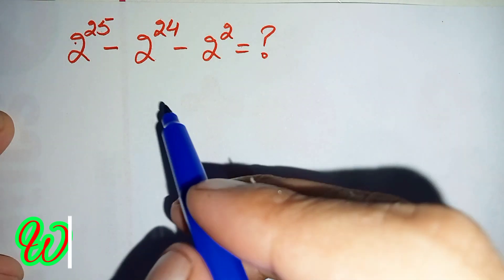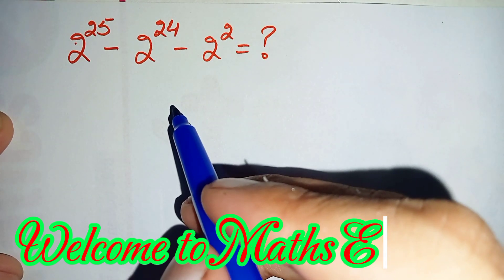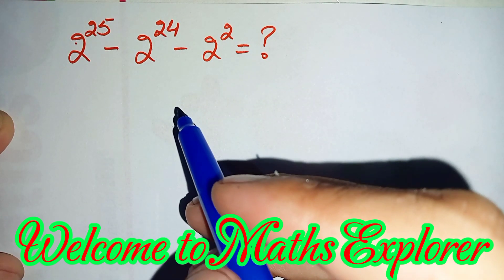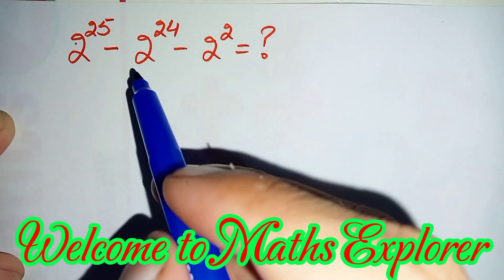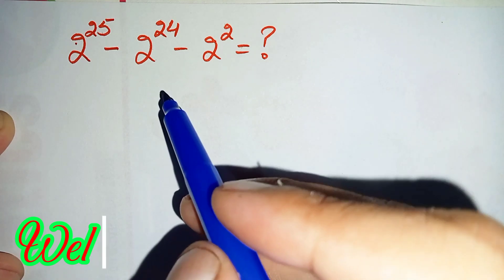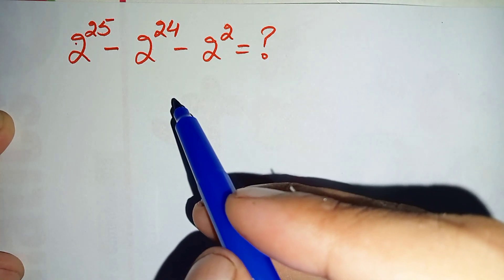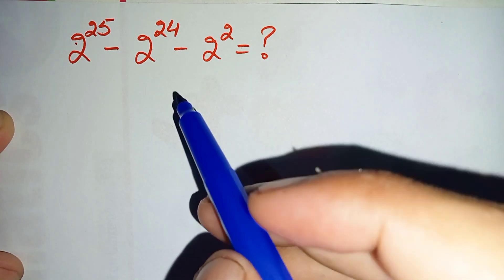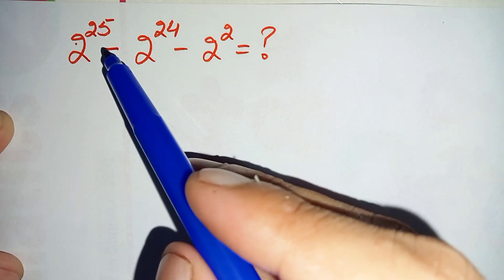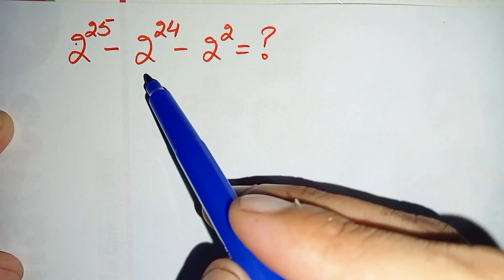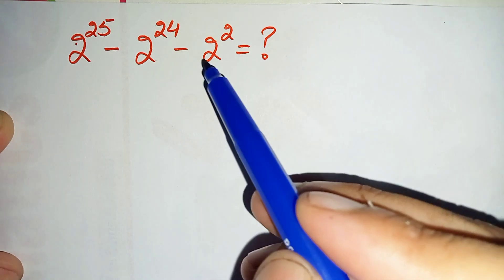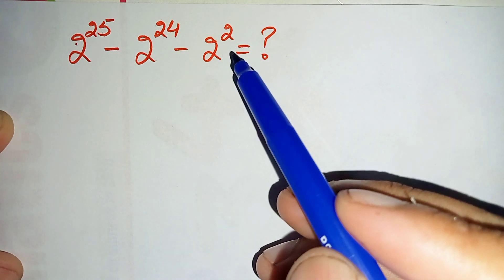Hello everyone, you are welcome to Math Explorer. In this video I'm going to solve and find the value of this nice simplification math problem: 2 raised to power 25 minus 2 raised to power 24 minus 2 raised to power 2.